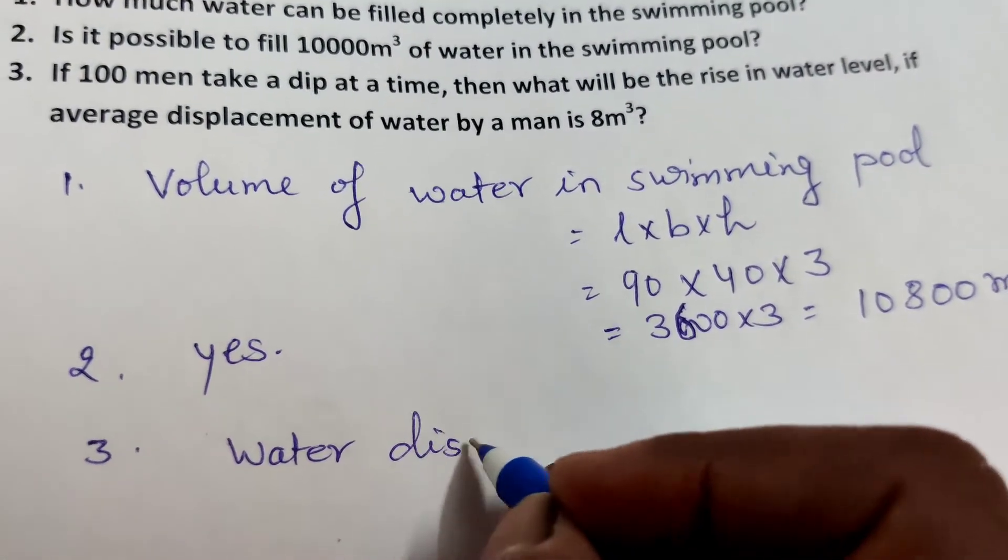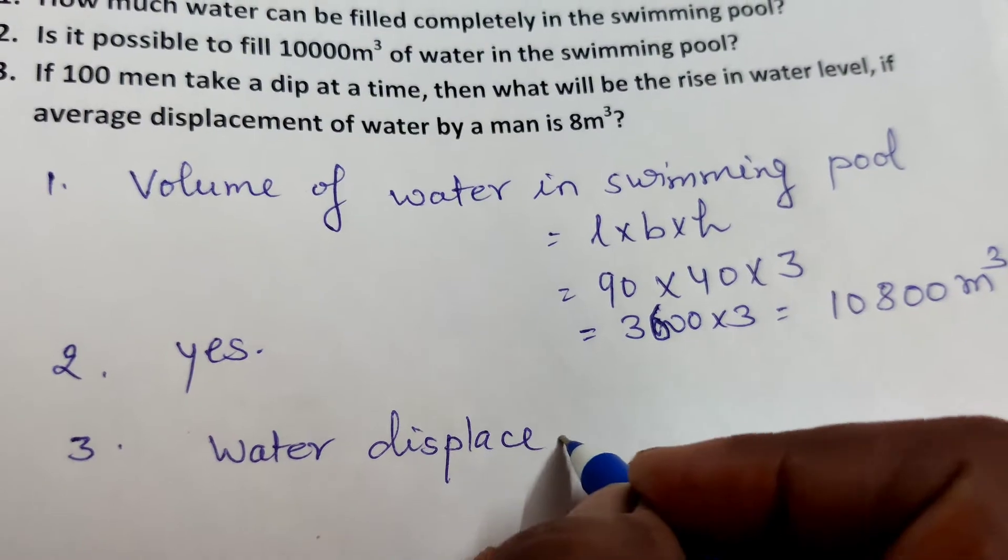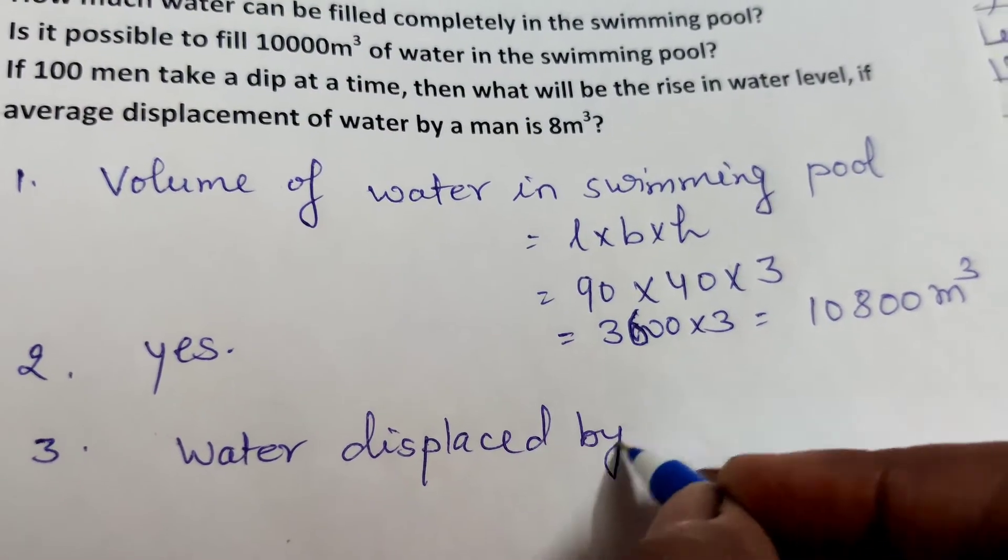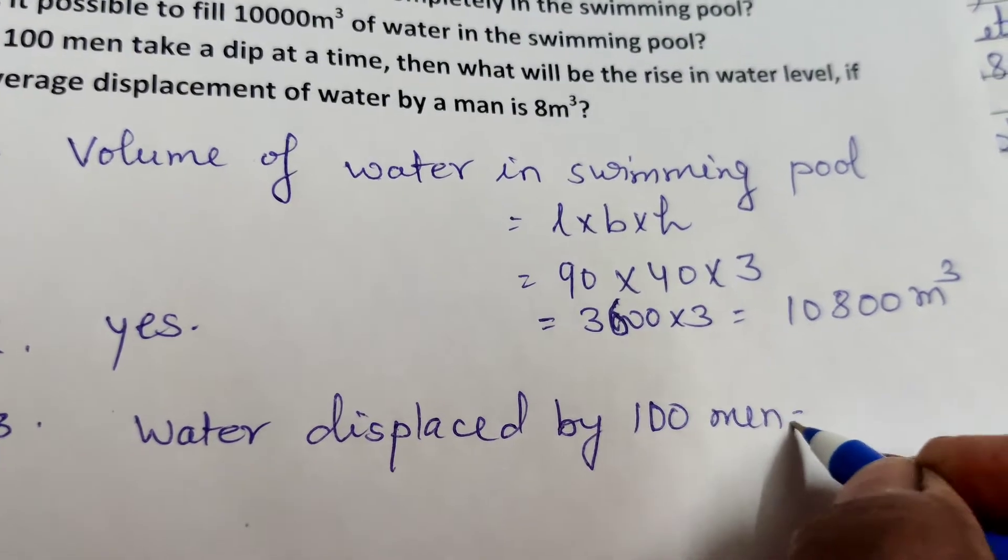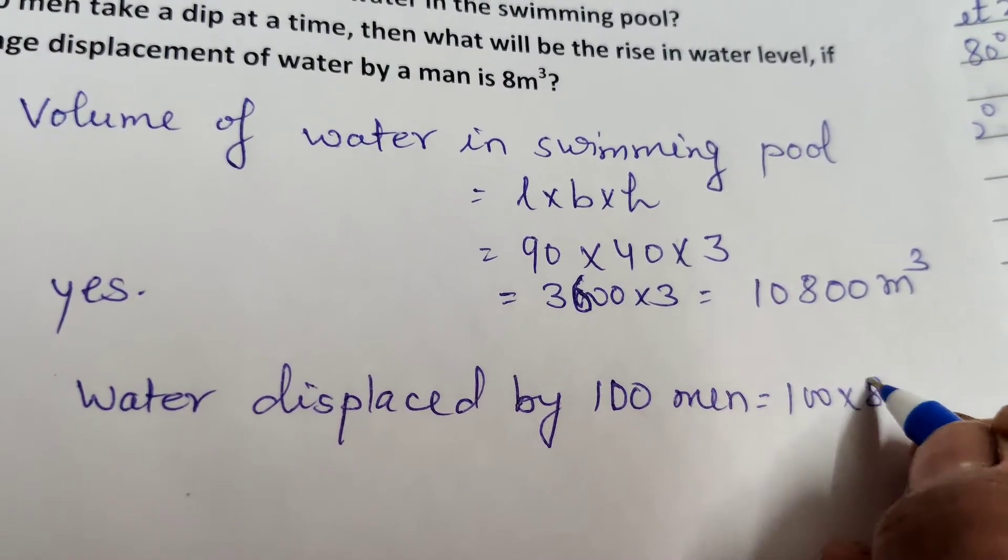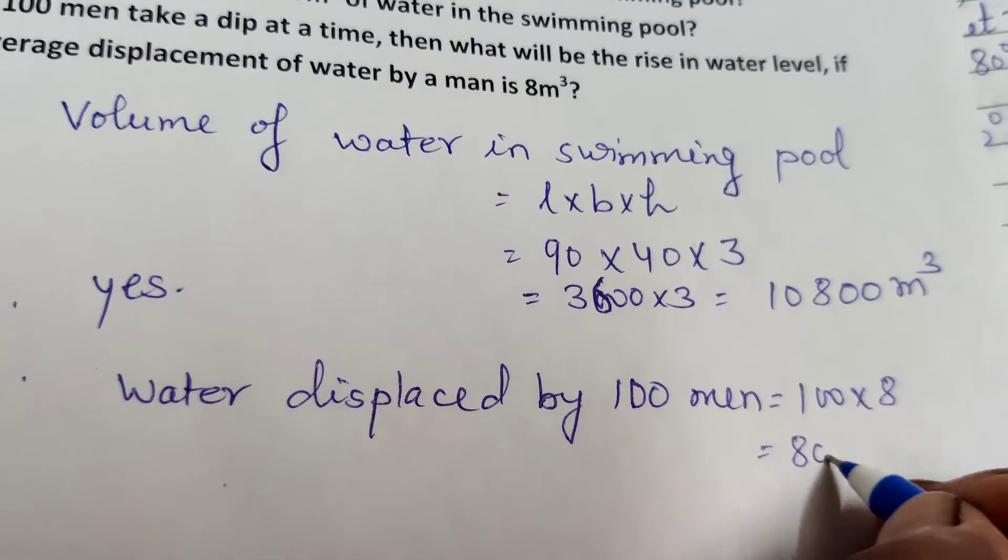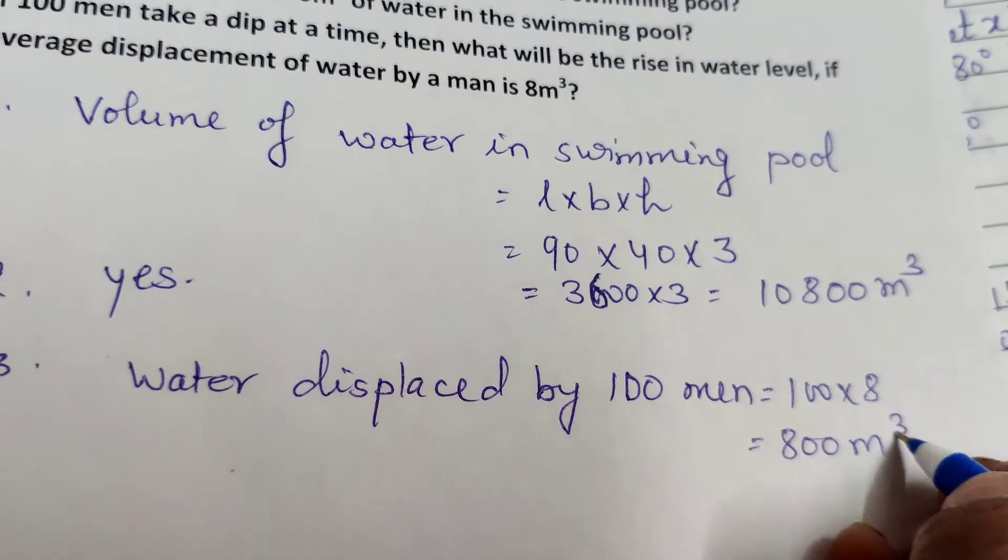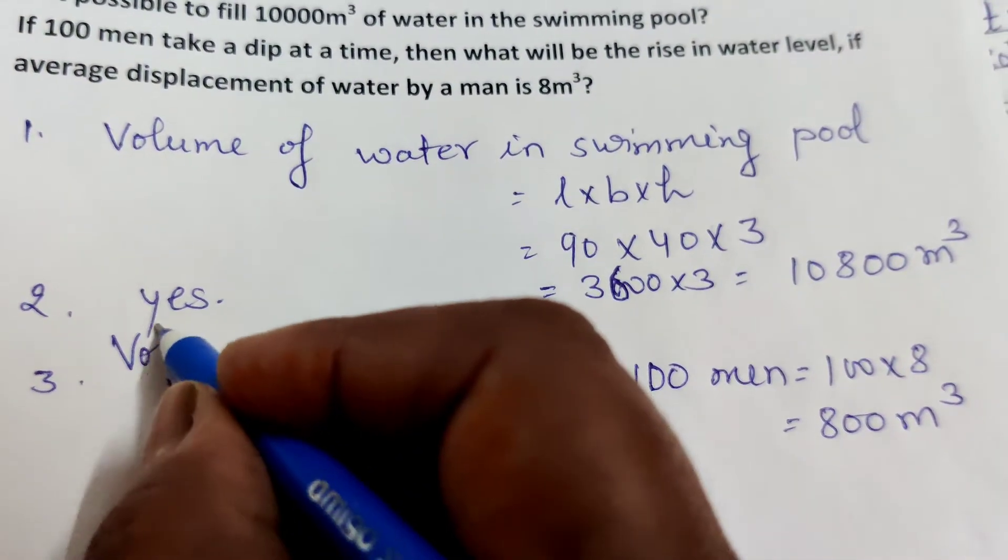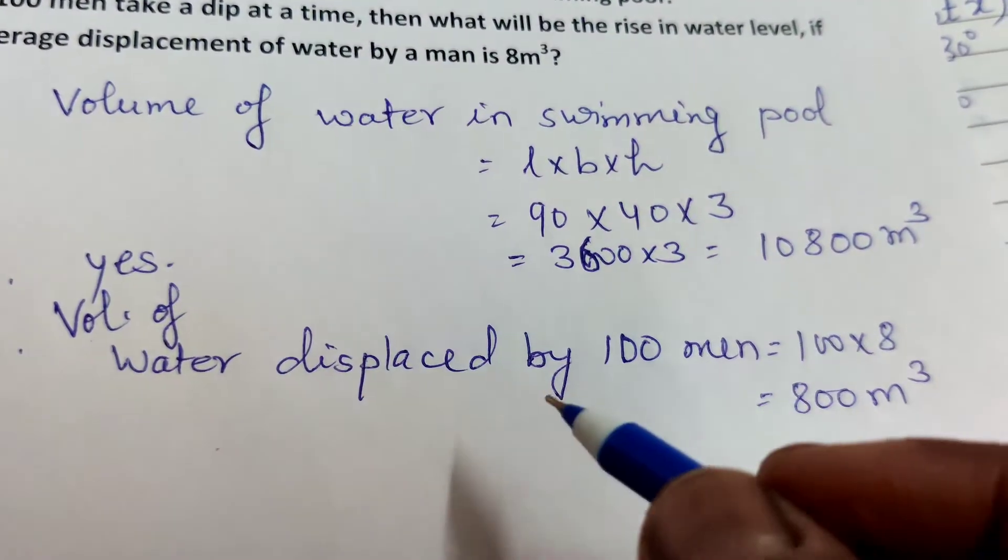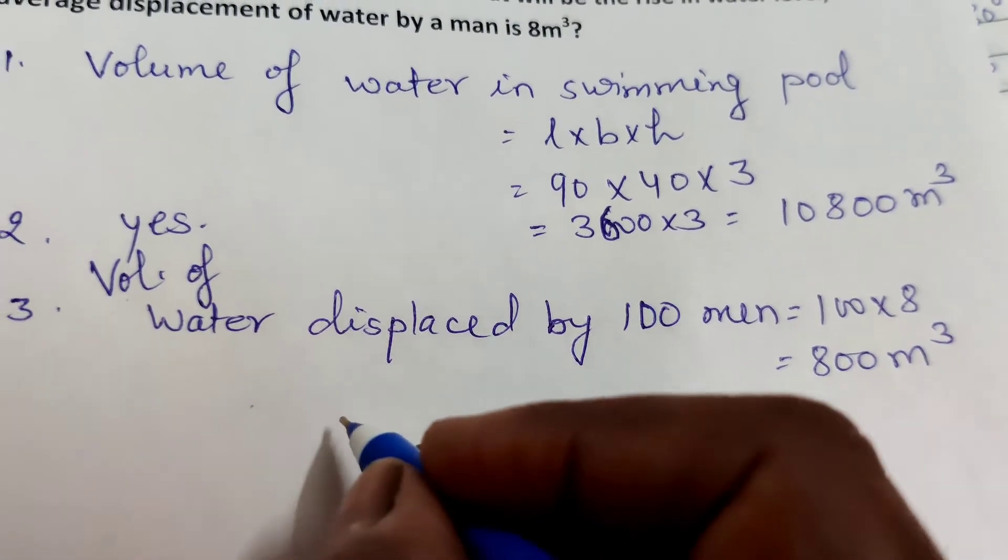Water displaced by 100 men means 100 into 8. How much volume of water can be displaced? 800 cubic meters. The volume of water displaced by 100 men is 800 cubic meters.